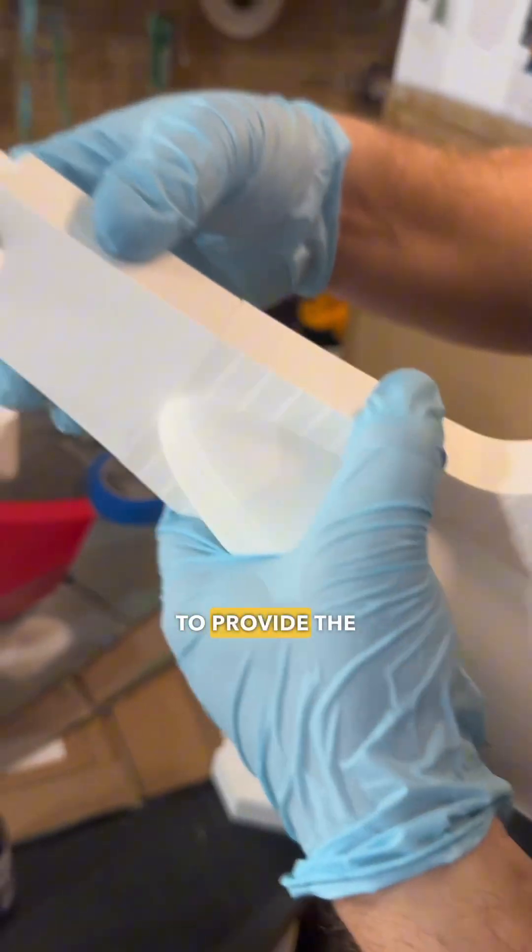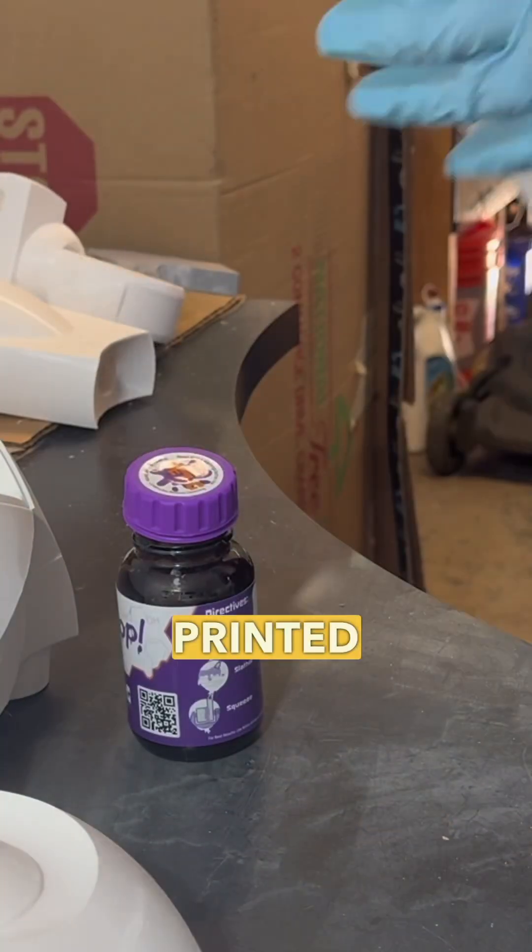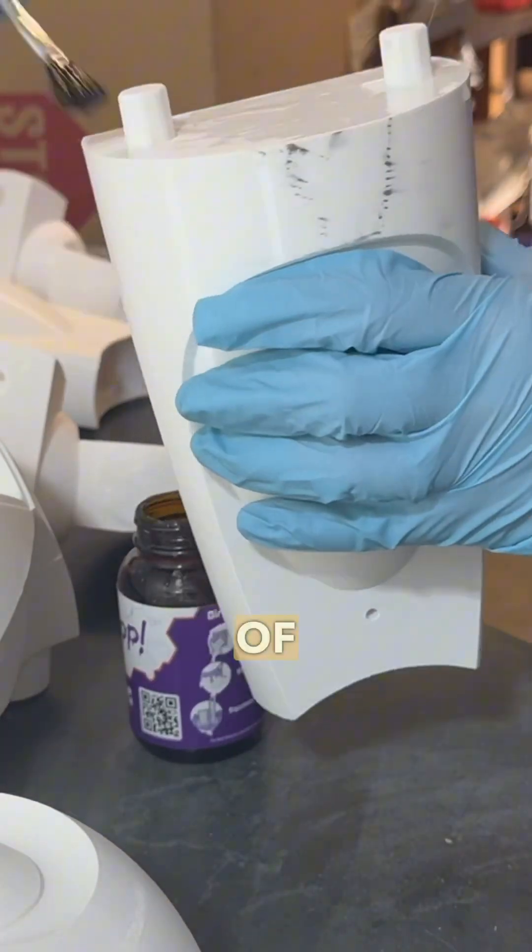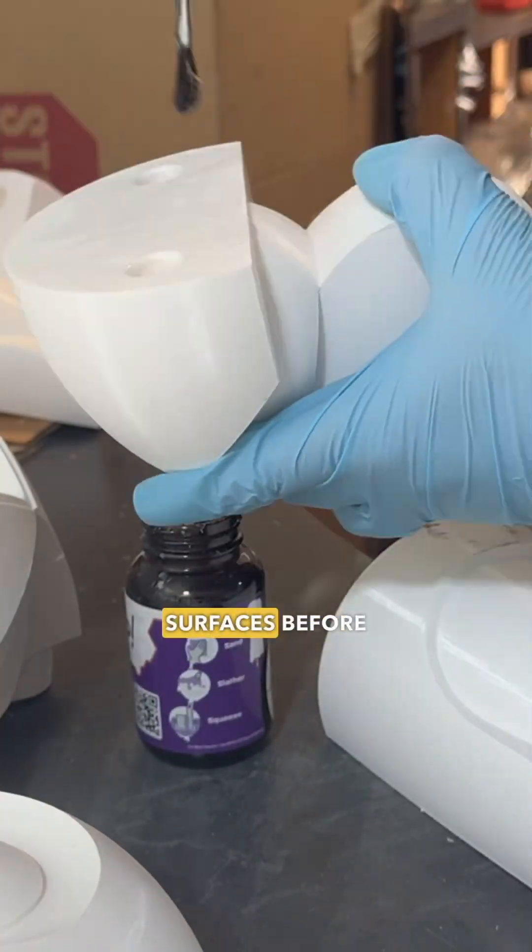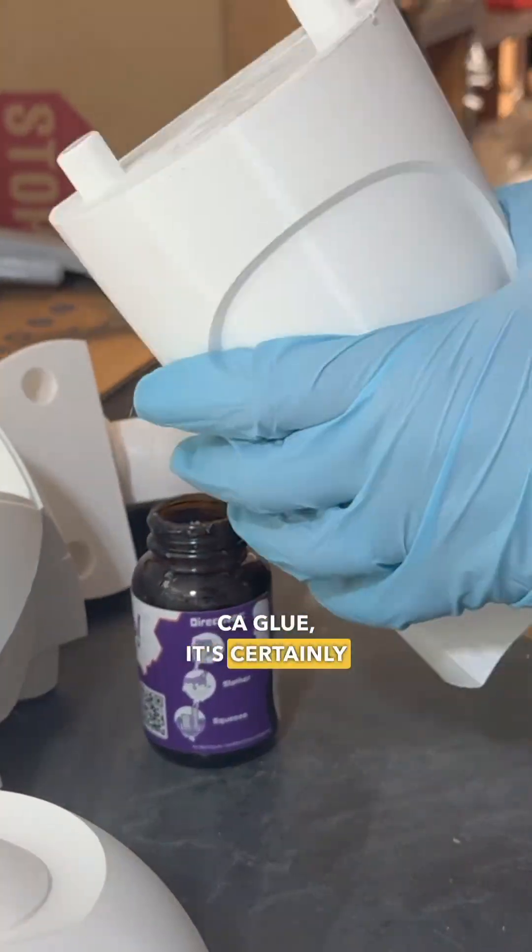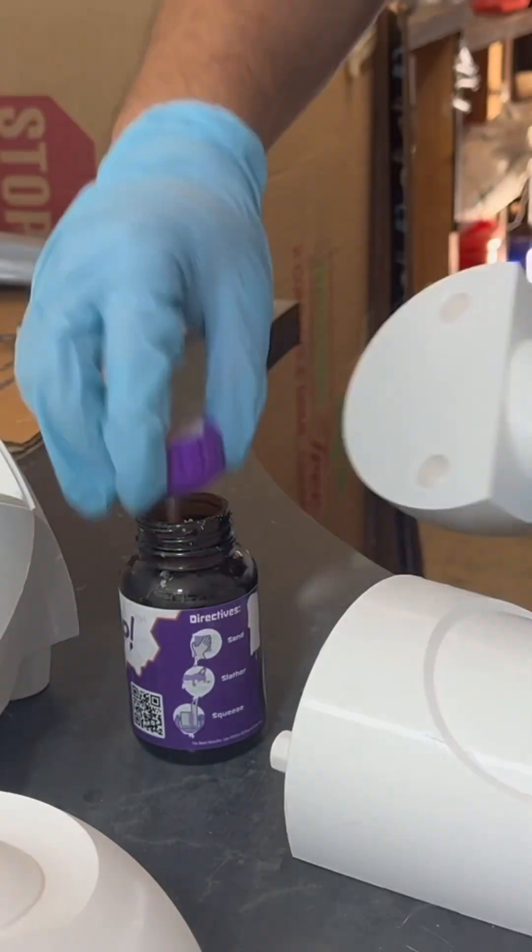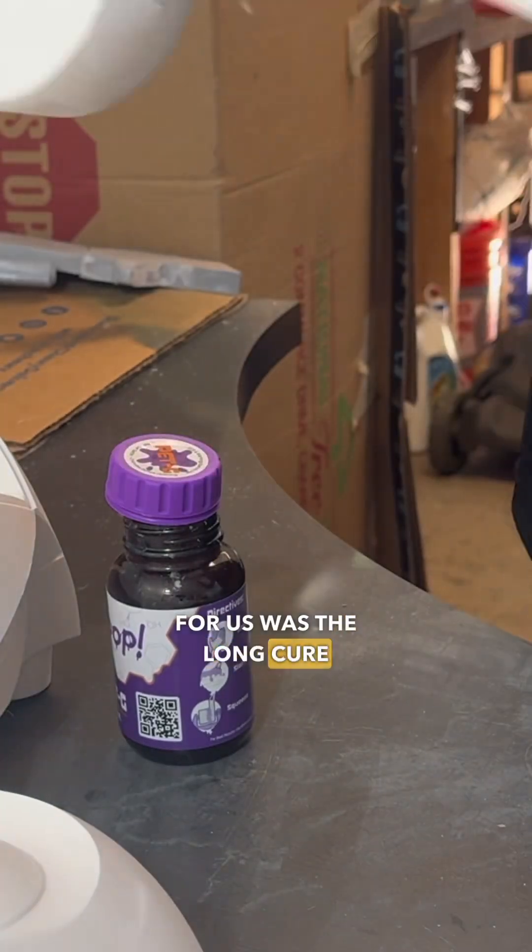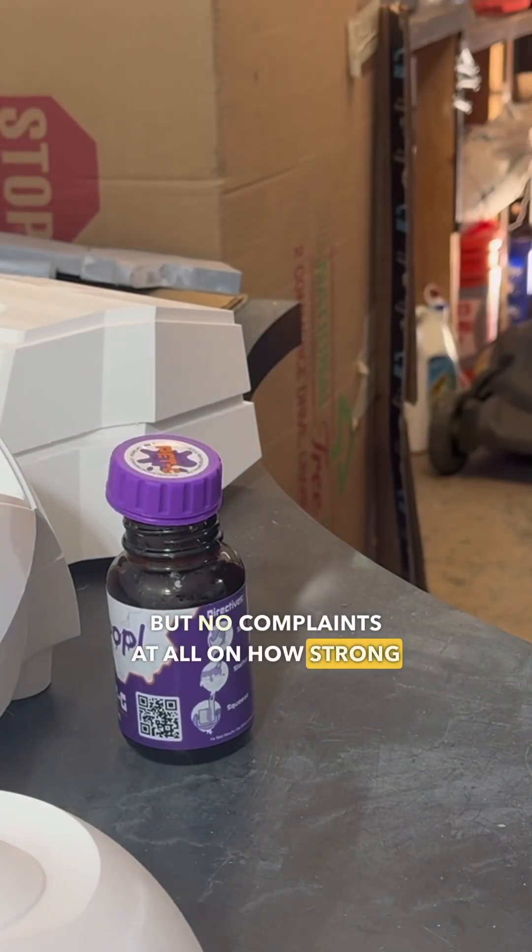The creators of PETG Gloop say it's designed to provide the strongest bond between two 3D printed parts ever. We did learn the value of laying it on thick and sanding the surfaces before we apply. Unlike using something like CA glue, it's certainly not instantaneous in the fusing. And I think the biggest downside for us was a long cure time, but no complaints at all on how strong the bond was.